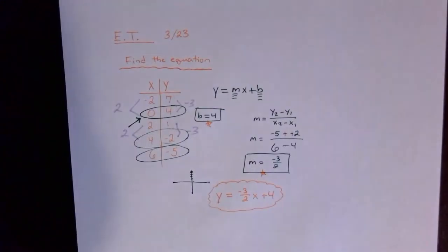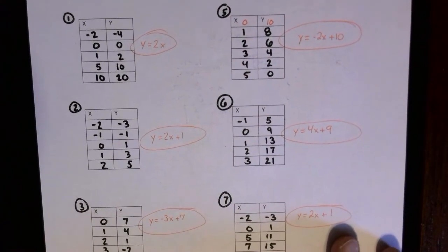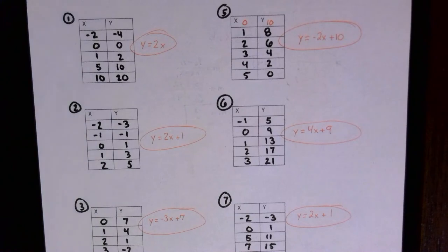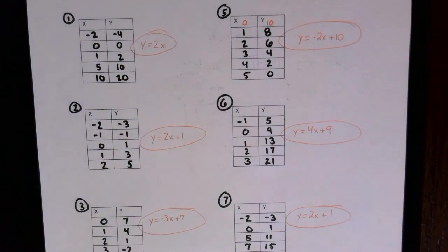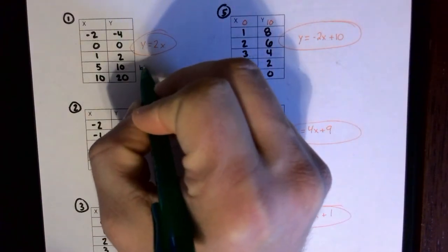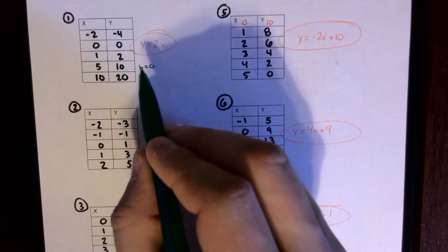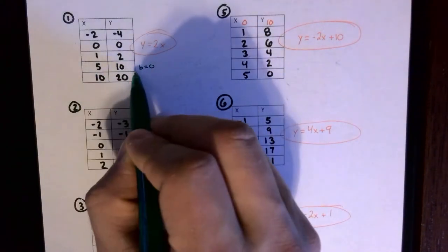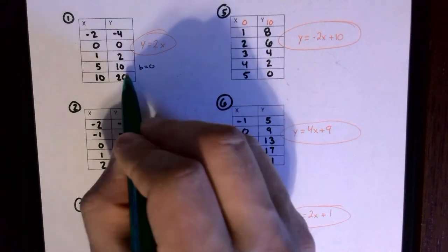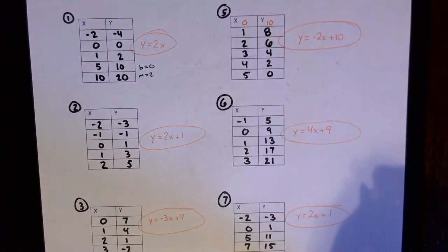Here's your entrance task answer. Now let's look at the homework answers from the end of Friday's lesson. For every one of these I found what m and b were. For example, one goes through the origin so b is 0 — you can think of it as y equals 2x plus 0. Taking two points: up 10 over 5 gives a change of y over change of x of 2, so m is 2 and b is 0.